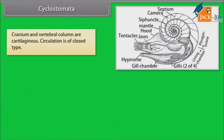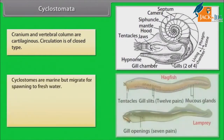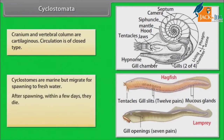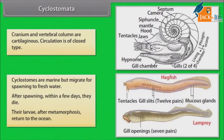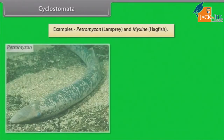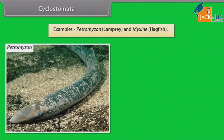The cranium and vertebral column are cartilaginous. Circulation is of closed type. Cyclostomes are marine but migrate for spawning to fresh water. After spawning, within a few days they die. Their larvae after metamorphosis return to the ocean. Examples: Petromyzon (Lamprey) and Myxine (Hagfish).